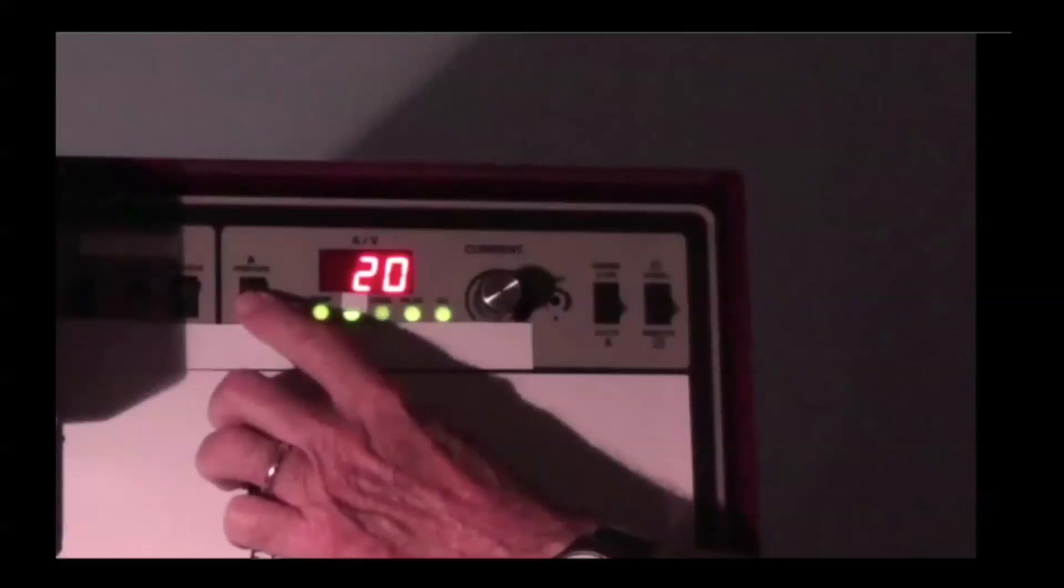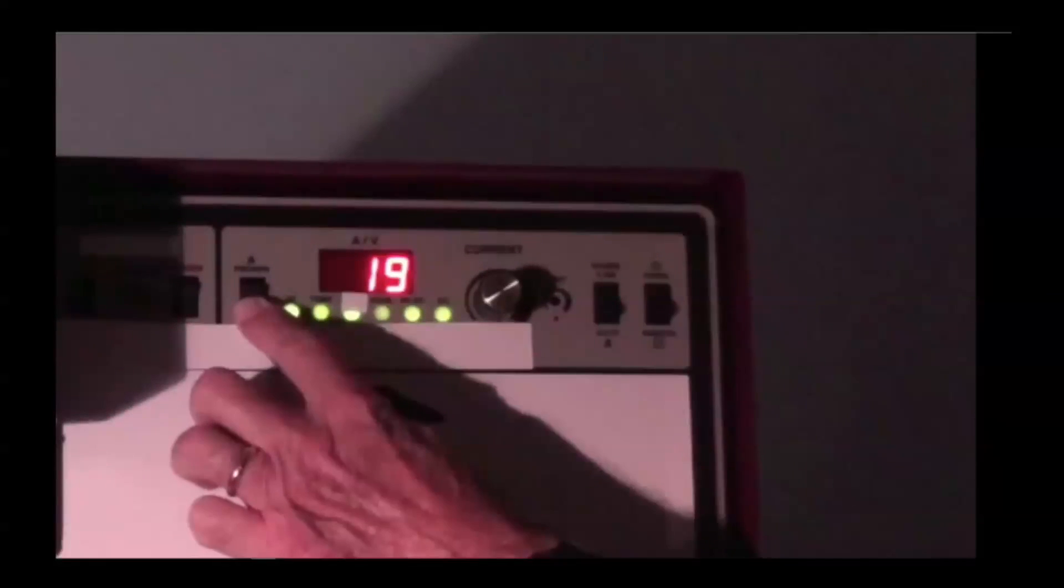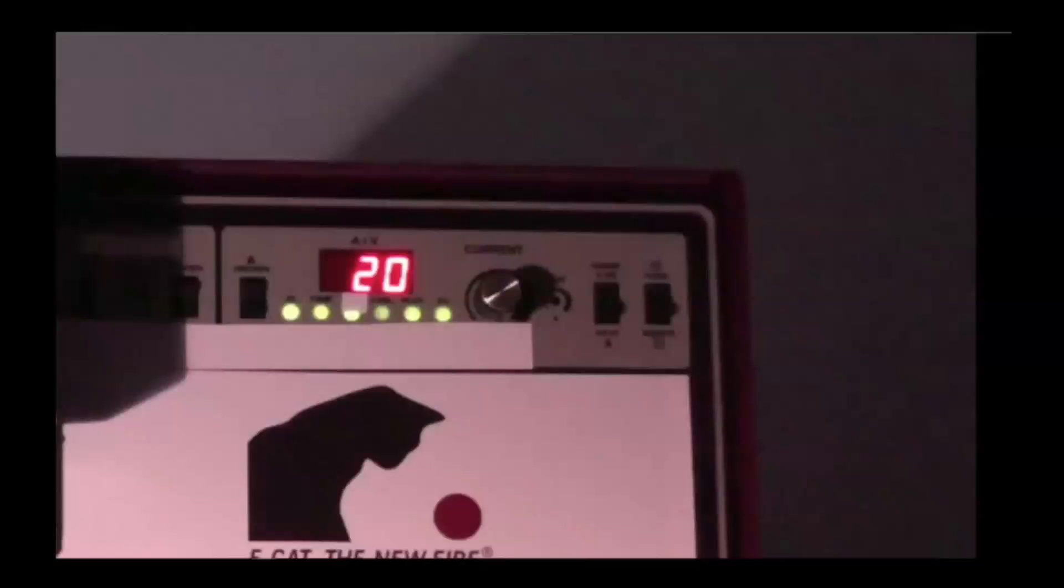You can see in the view of the controller that the operator is displaying the voltage that is going into the ECAT. As you can see, we can read 19 volts.